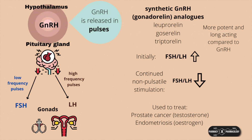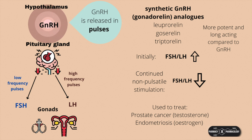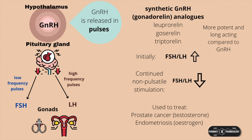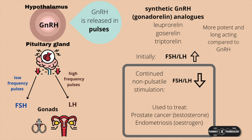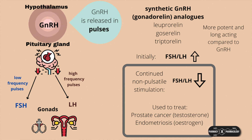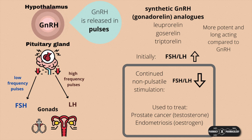There are GNRH analogs, which are mostly agonists of the GNRH receptors. These include leuprorelin, goserelin, and triptorelin. Exogenous infusions will initially cause a transient increase in sex hormones, but with continued non-pulsatile stimulation, cause inhibition of FSH and LH, which in turn causes reduced levels of estrogen and testosterone. GNRH analogs are more potent and have more sustained action than GNRH, and are used to treat conditions which are dependent on sex hormones — for example, prostate cancer, which is fed by testosterone, and endometriosis, which is aggravated by estrogen.